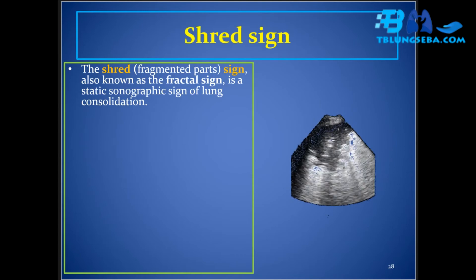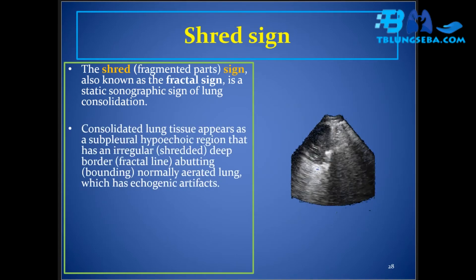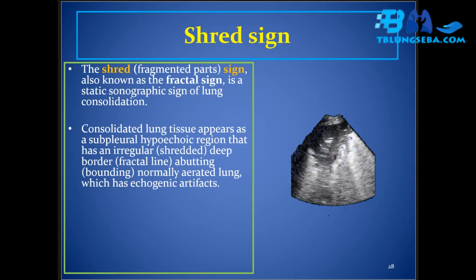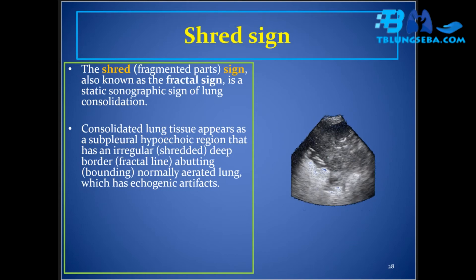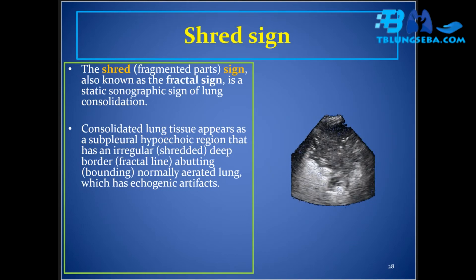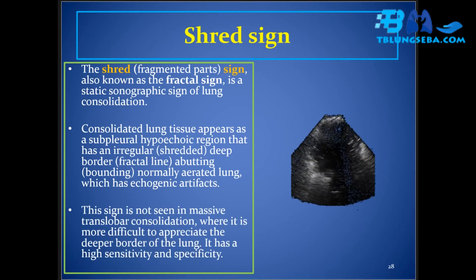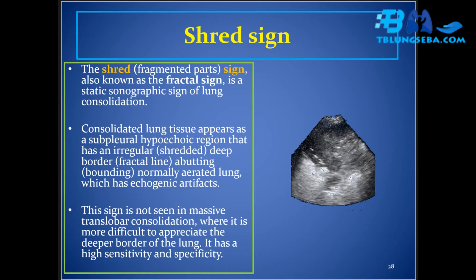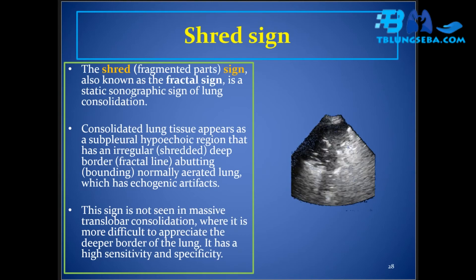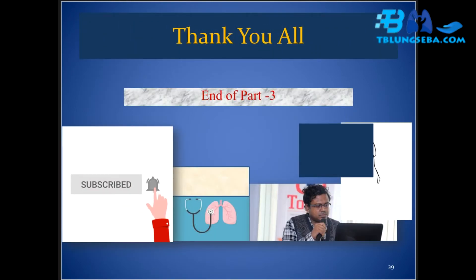The shred sign, also known as the fractal sign, is a static sonographic sign of lung consolidation. Consolidated lung tissue appears as a subpleural hypoechoic region with an irregular shredded deep border — the fractal line — abutting normally aerated lung which has echogenic artifacts. This sign is not seen in massive translobar consolidation where the deeper border is more difficult to appreciate. It has high sensitivity and specificity.